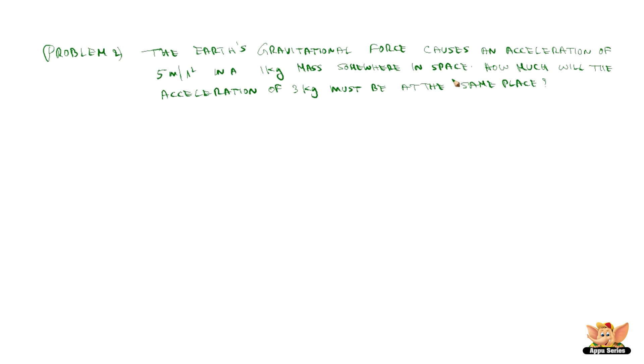But it is at the same place so g does not depend on mass. We understand that the acceleration due to gravity does not depend on the mass of the object. Therefore g is the same, 5 meter per second square on 1 kg or 5 kg or 3 kg or whatever the mass is, g will be the same.